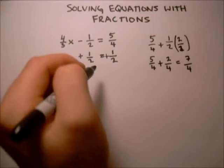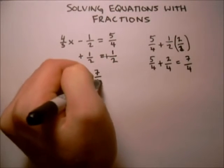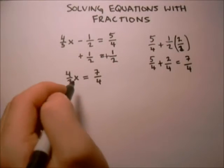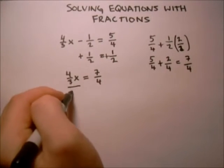So now we have 4 thirds x equals 7 fourths. Now the last thing we want to do is divide by the stuff that's multiplying x, which is 4 thirds.